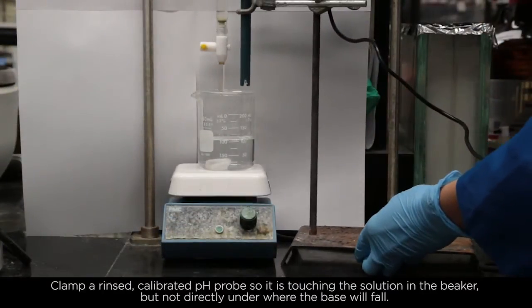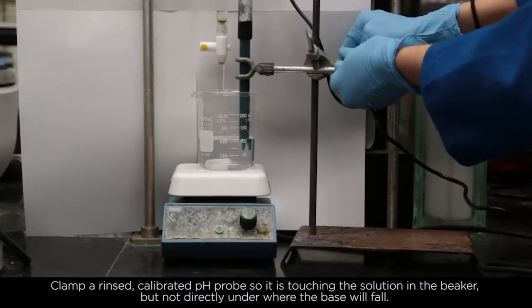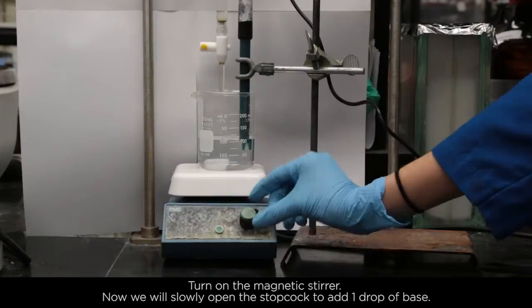Clamp a rinsed calibrated pH probe so it is touching the solution in the beaker, but not directly under where the base will fall. Turn on the magnetic stirrer.